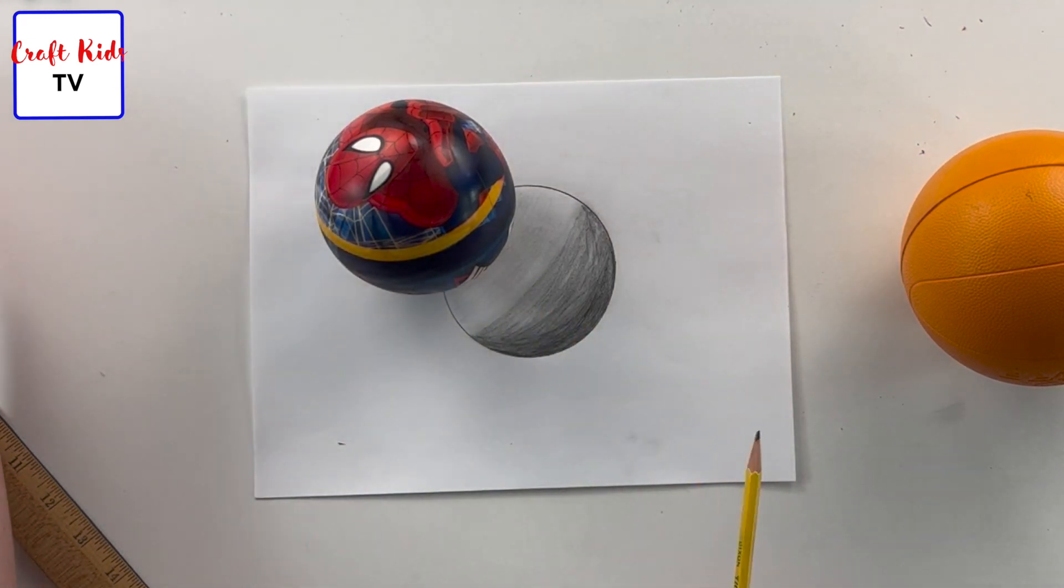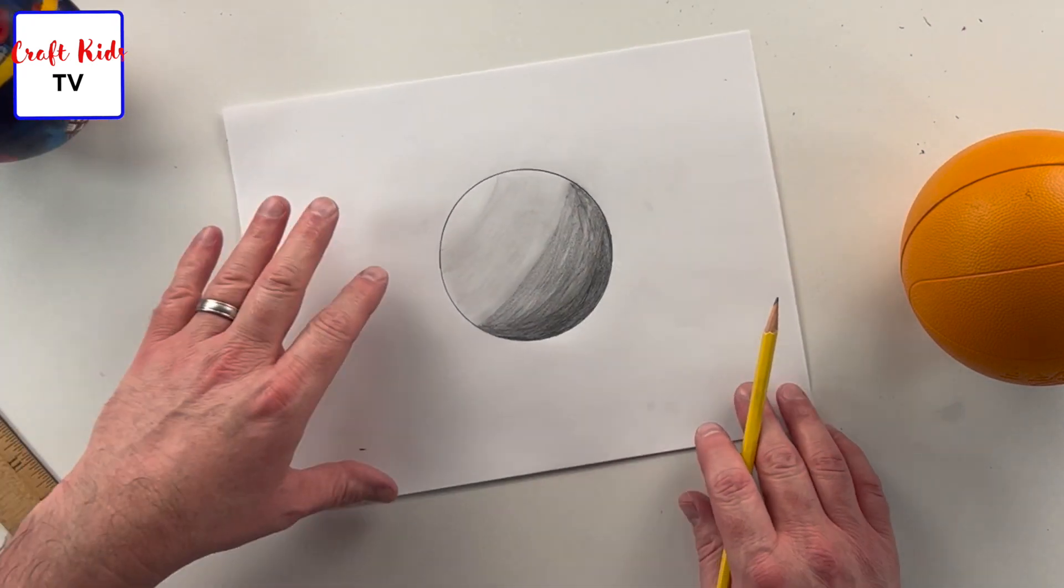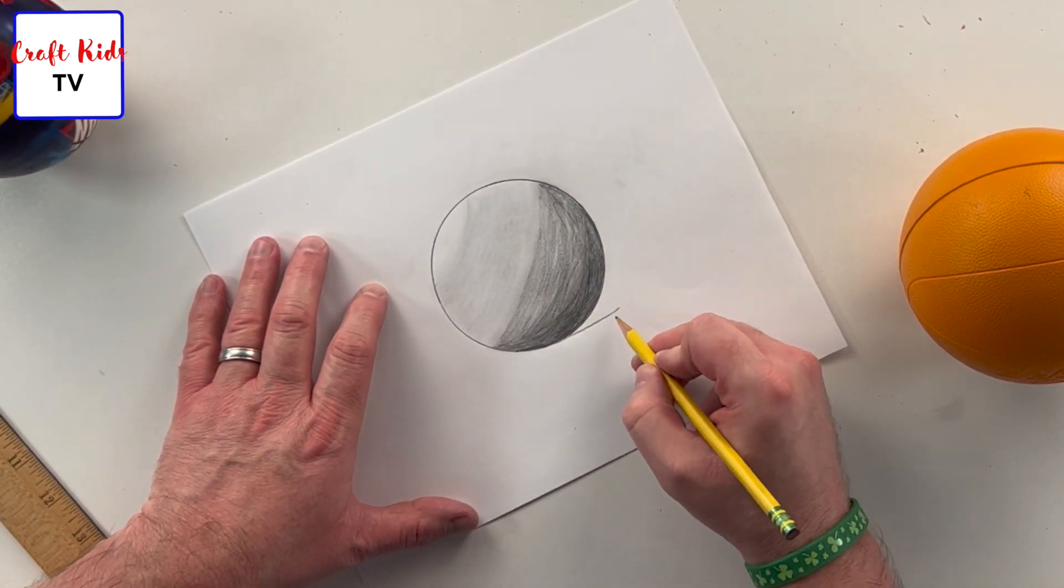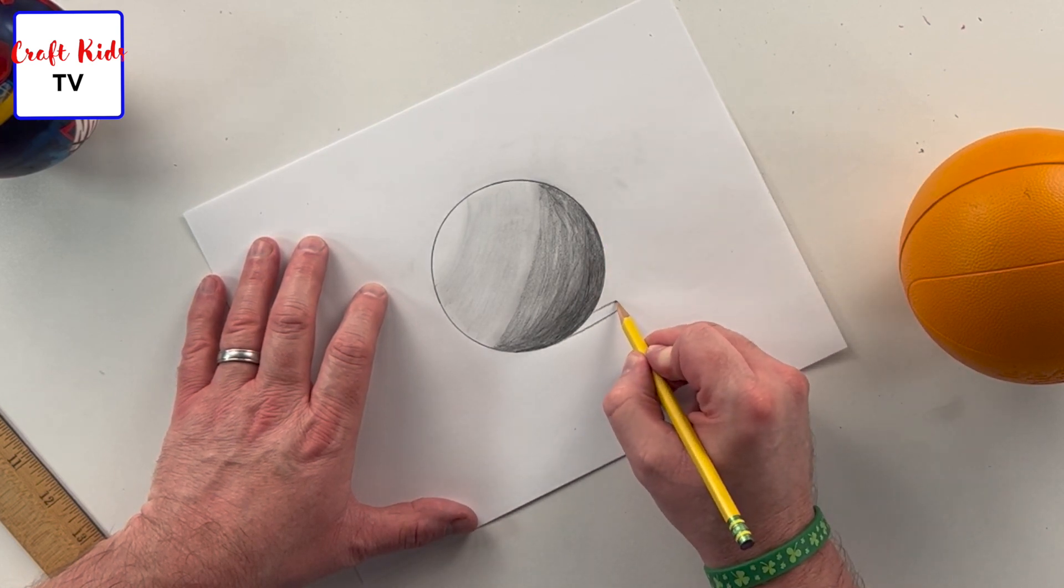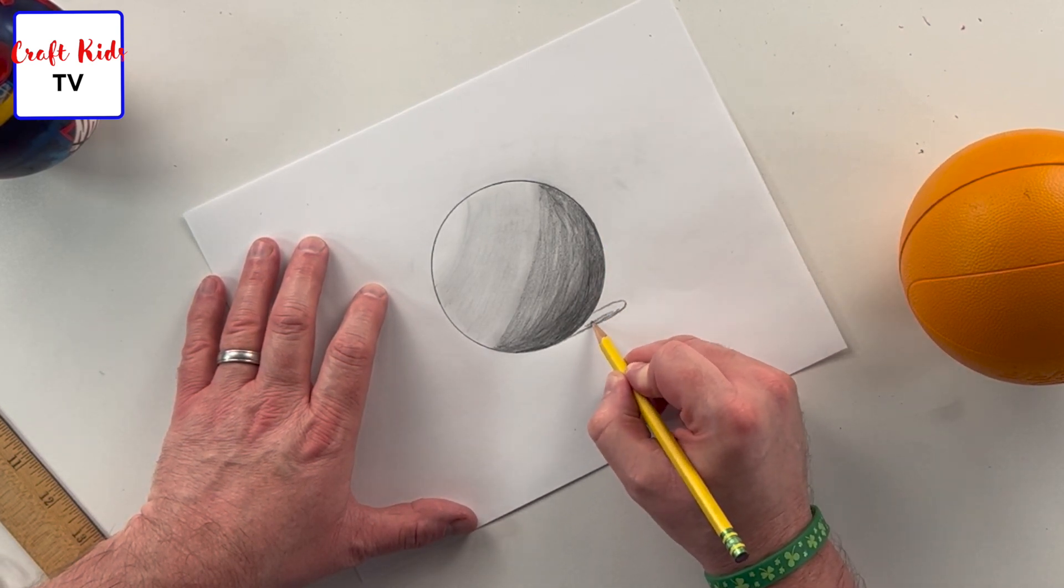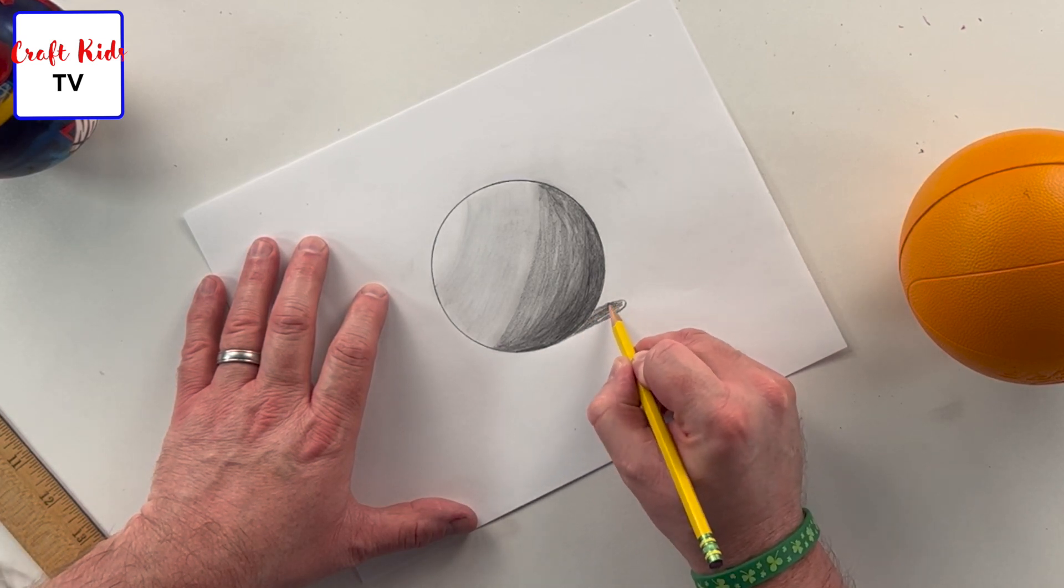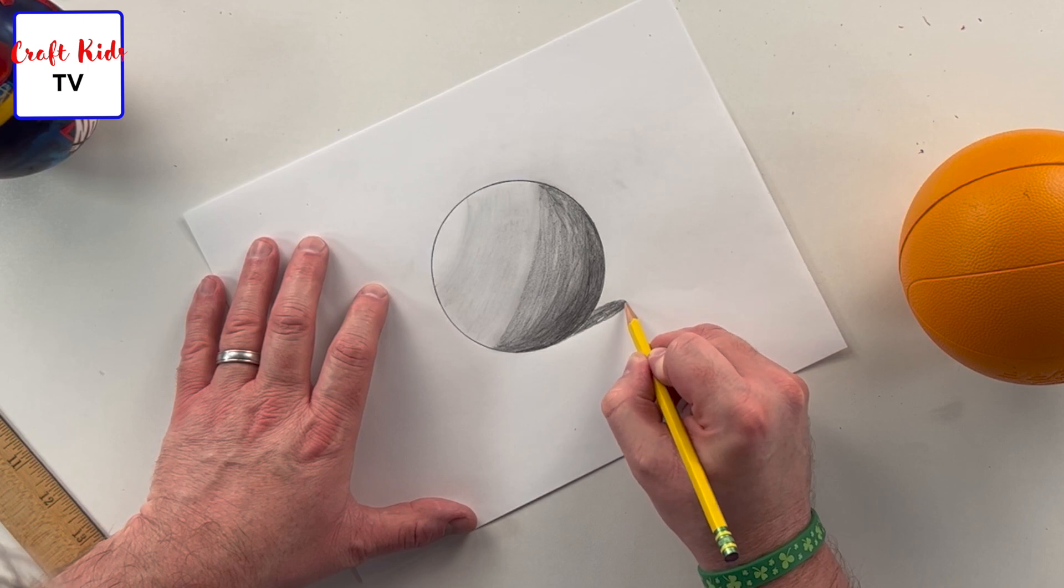So we're gonna represent that intense area. We're gonna do just a little, almost like an oval underneath the ball, and we're gonna go dark on that, real dark.